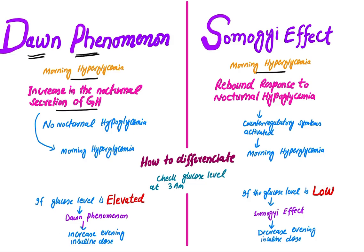In both Dawn Phenomenon and Somogyi Effect, fasting blood sugar will be high in the morning. In Somogyi Effect, there will be nocturnal hypoglycemia, but there is no nocturnal hypoglycemia in Dawn Phenomenon. In Dawn Phenomenon, there is increased nocturnal secretion of growth hormone that leads to morning hyperglycemia.